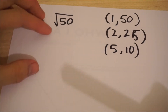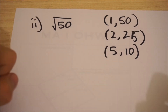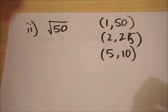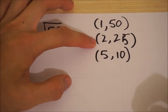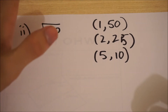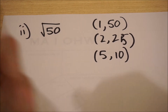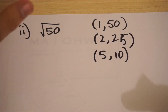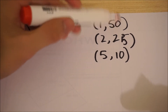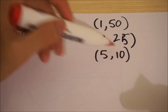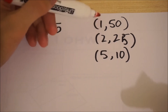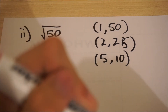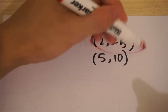No matter how large the number inside the square root sign is, we can always try to reduce it to a smaller number. Take the square root of 50. The factors of 50 are: 1 and 50, 2 and 25, and 5 and 10. When simplifying surds, we're interested in factor pairs that contain a perfect square — a number whose square root is a whole number. The square root of 25 equals 5, so that's the pair we want to work with.